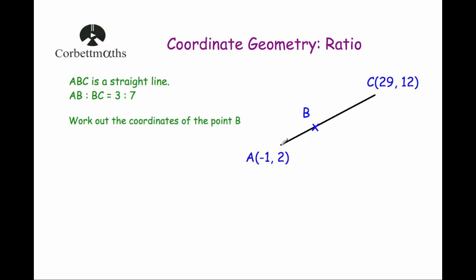The first thing I would do is consider the x-coordinates of points A and C. They are 30 apart — we go 30 across to get from A all the way to C. Now this line AC is in the ratio 3 to 7, which means horizontally the distance from A to B and B to C would also be in the ratio 3 to 7. So if I divide this line of 30 in the ratio 3 to 7, I can work out how far across B is from A.